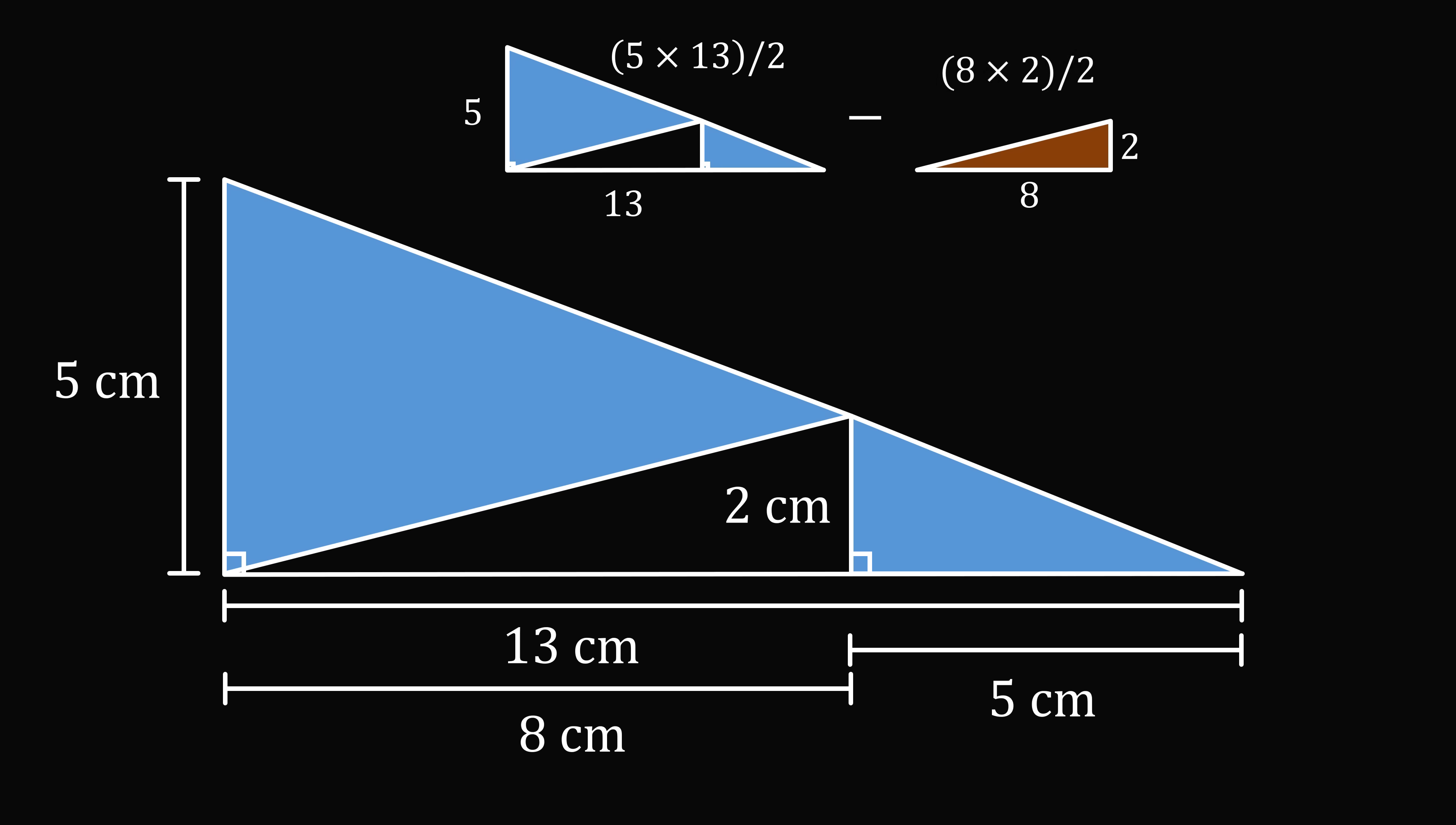The second area will be 8 times 2 divided by 2. The first area works out to be 32.5. The second area is 8, and that gives the answer of 24.5 square centimeters. So that seems to be the answer for the total area that's shaded in blue.